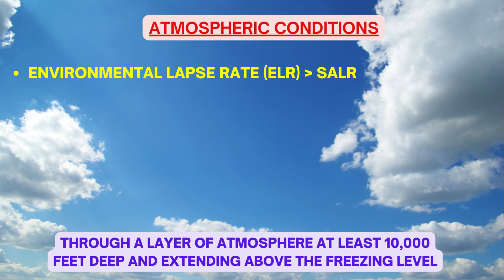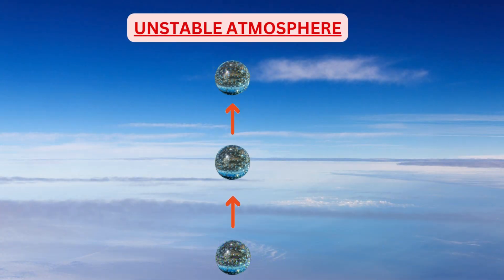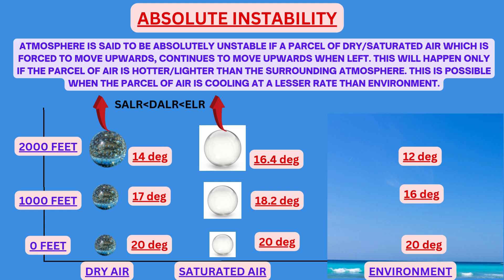Let us revise what absolute instability is. The atmosphere is said to be absolutely unstable if a parcel of dry or saturated air which is forced to move upwards continues to move upwards when left free. This will happen only if the parcel of air is hotter or lighter than the surrounding atmosphere — that is possible when the environment is cooling at a faster rate than the parcel of dry or saturated air going upwards, or when ELR is more than DALR — absolute instability conditions exist in the atmosphere.